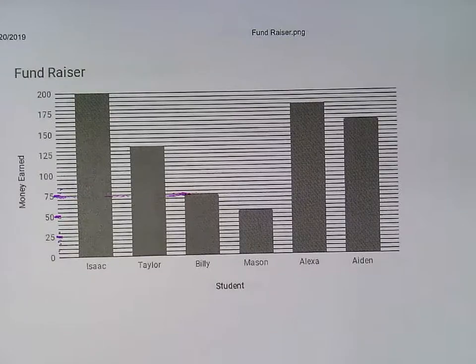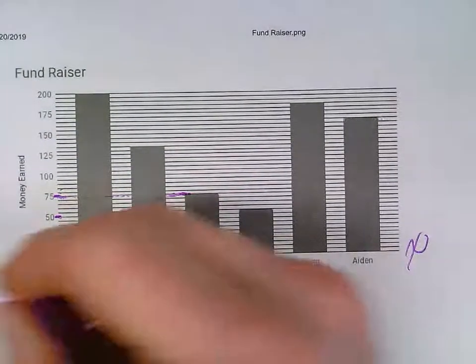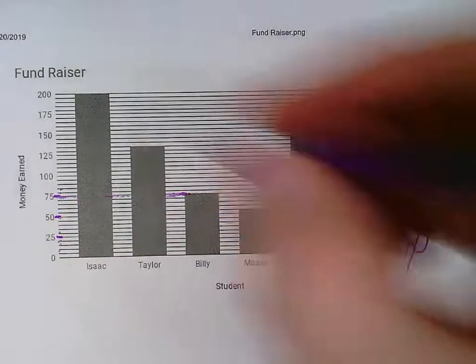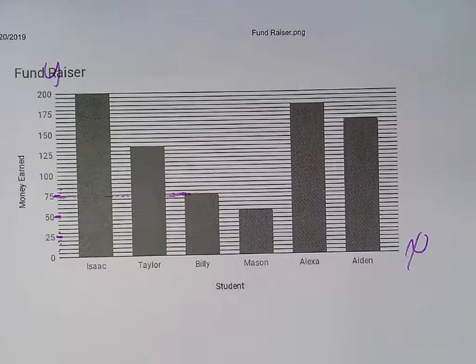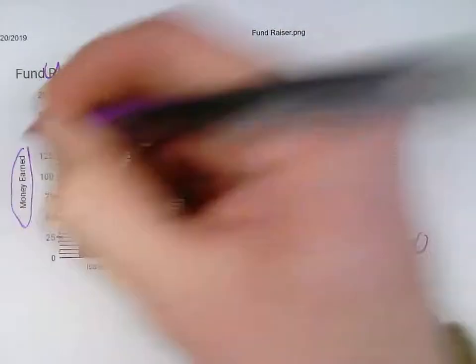Once again, your x-axis goes horizontally. Your y-axis goes vertically. And on all graphs, you need to make sure that there's a title and that your x and y-axis are labeled.